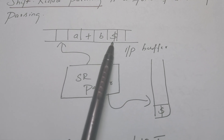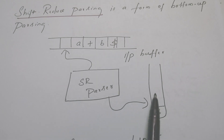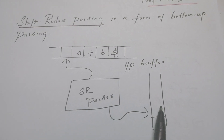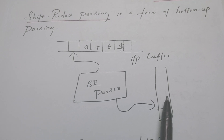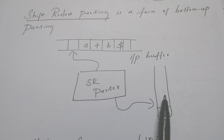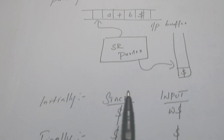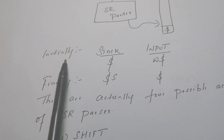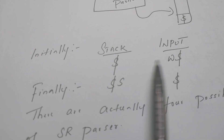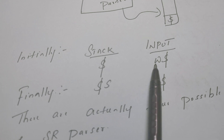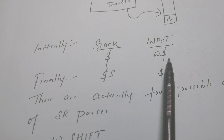Dollar indicates the end of the string. The control unit shifts some symbols onto the stack, finds the perfect handle from what is pushed onto the stack, and replaces that handle with the head of the production rule — performing a reduction action. Initially the stack is empty, marked by dollar, and the input buffer contains the string w, with dollar marking the end.